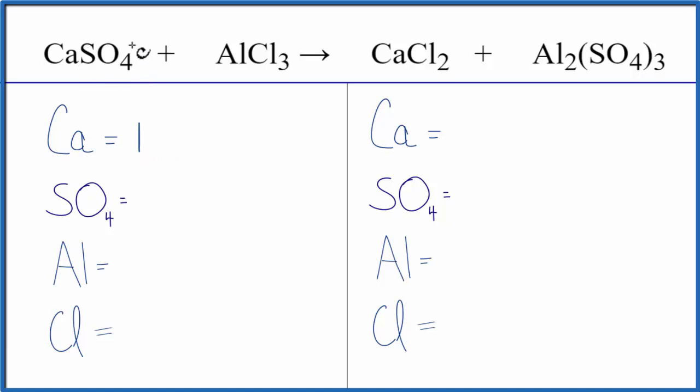Because we have this SO4 here, and we have it here. It's called the sulfate ion. It's a polyatomic ion. It stays together in the chemical reaction. So we're going to just count this as one thing. We have one sulfate.